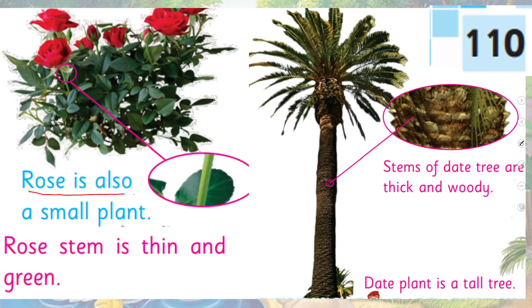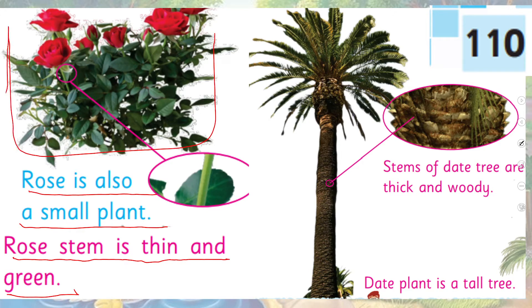Rose is also a small plant. Its stem is thin and green. Here you can see two plants — this flowering plant is the rose, which you commonly see. Its stem is very thin and small. It is also a small plant. You can see its stem here — it is very thin and green.